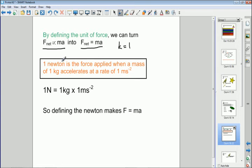So the Newton, 1 Newton is defined as the force applied when a mass of 1 kilogram accelerates at a rate of 1 meter per second squared. So if you have a kilogram mass and you accelerate it at a rate of 1 meter per second squared, you will, by definition, be using a force of 1 Newton to do that.